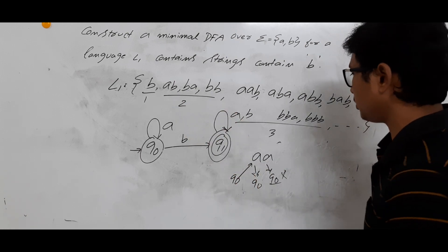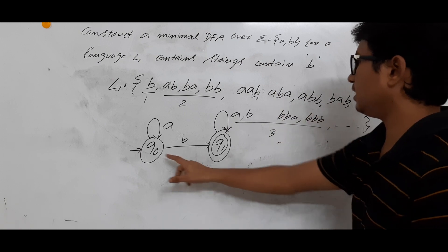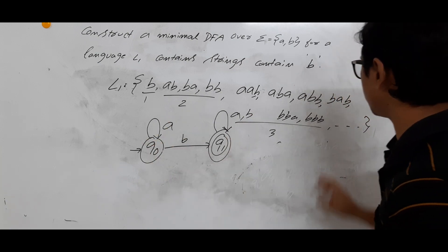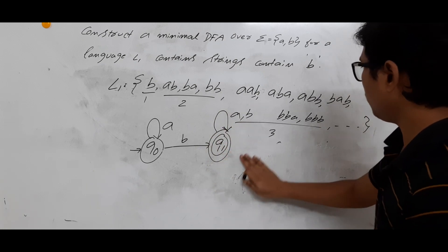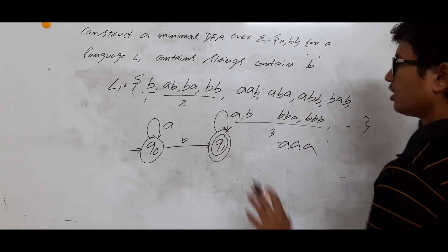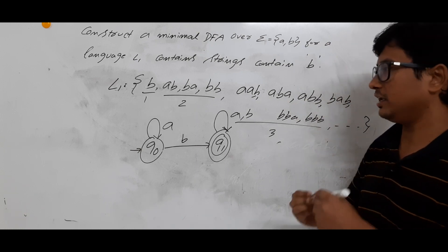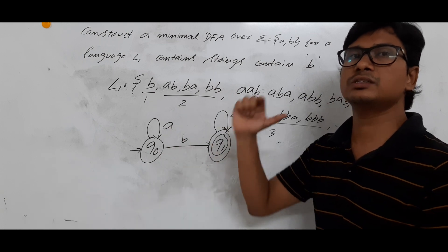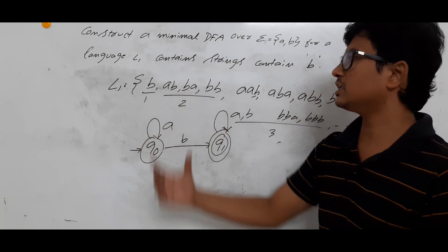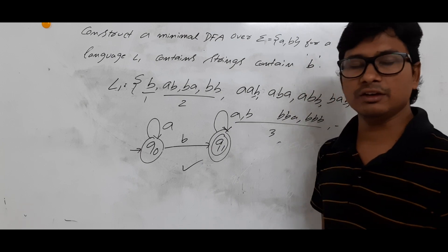aab is accepting. aba is accepted. abb is accepting. bab, bbb are accepting. Any string consisting only of a's — single a, two a's, three a's — will not be accepted because you stay in the initial state q0 the whole time. All remaining strings which belong to L1 will be accepted.